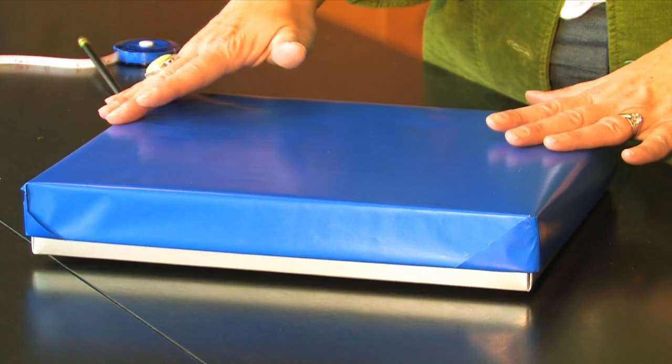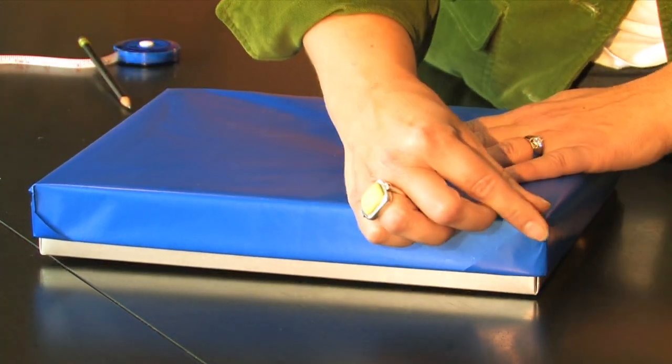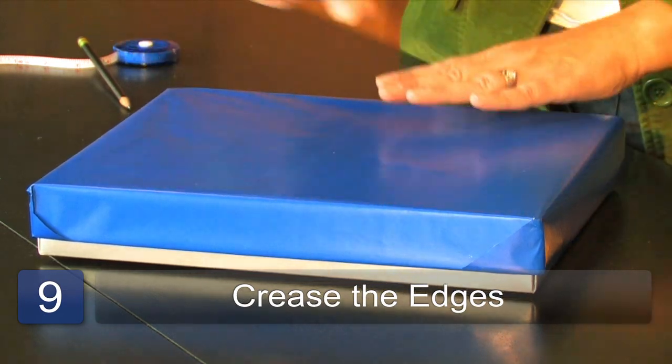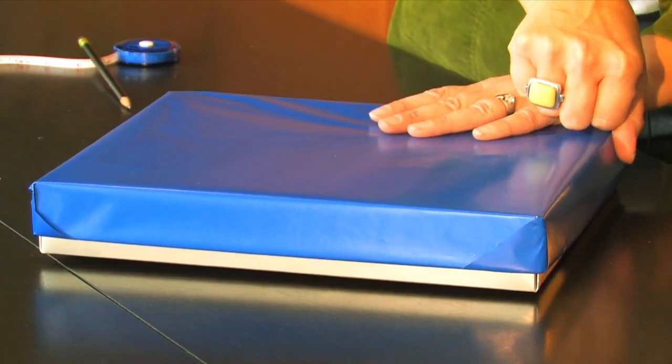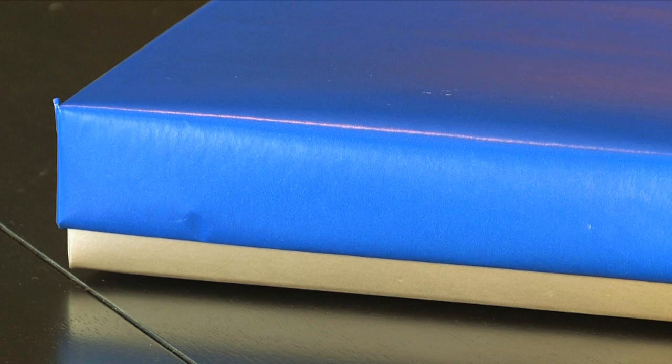The last step is to go ahead and put your lid on. Carefully crease the edges to give it a sharp finish. And I'm Krista Colvin and that's how you wrap a box lid.